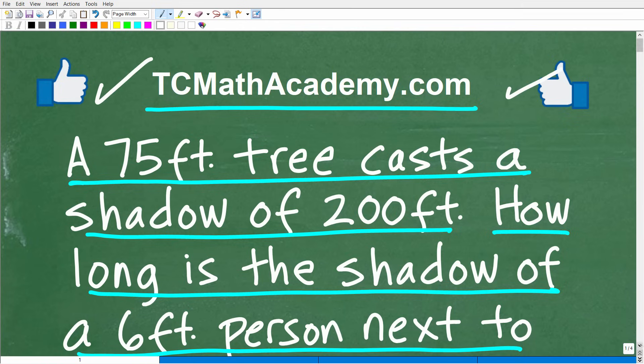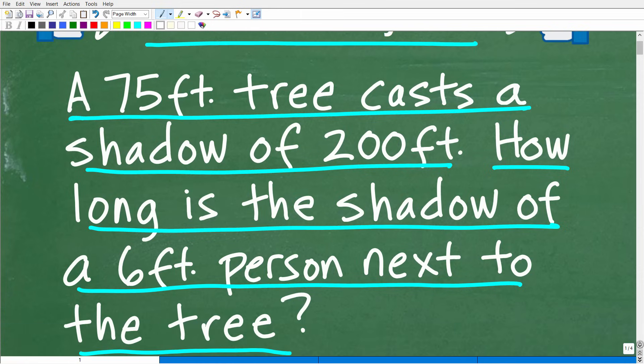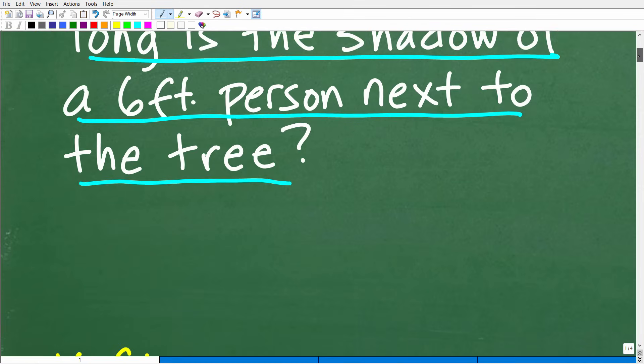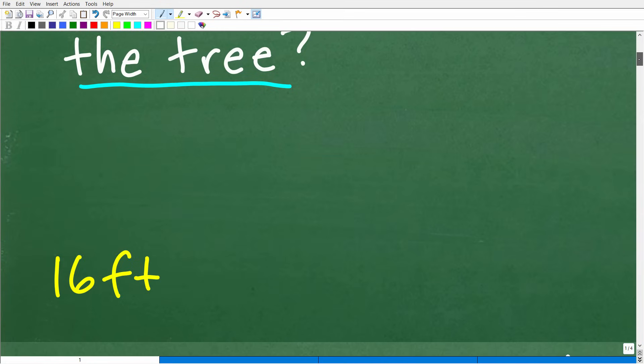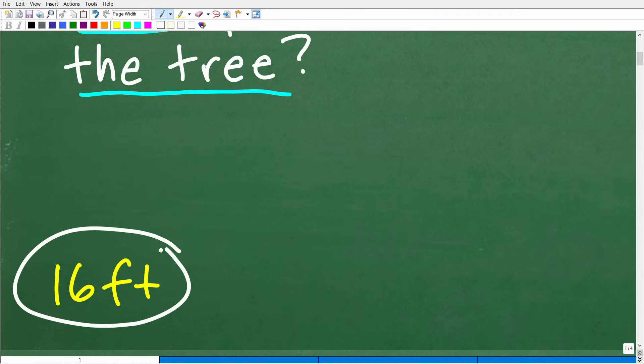Okay, so let's go ahead and take a look at the answer here. How long is the shadow of a six-foot person next to the tree? So this six-foot person next to the tree, their shadow under these circumstances would be 16 feet.